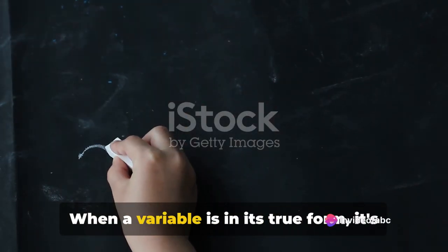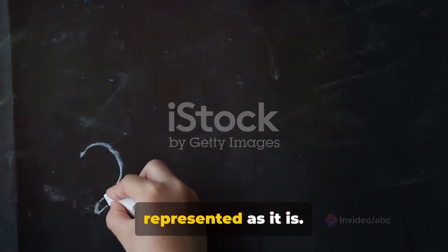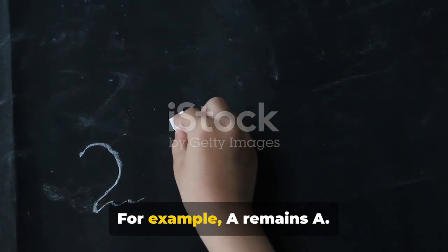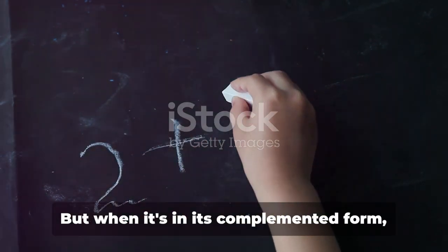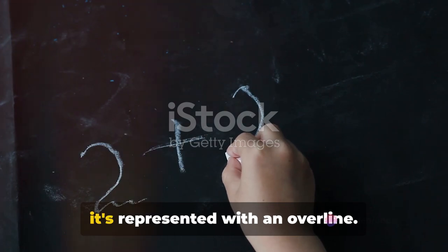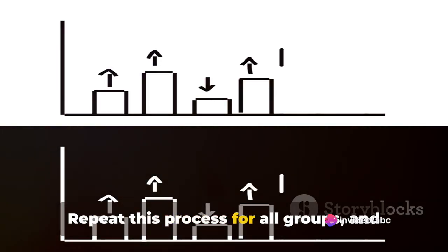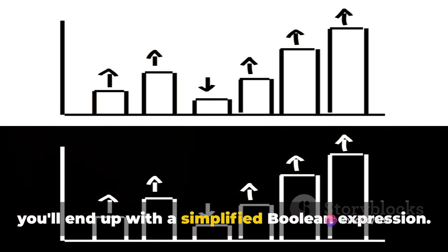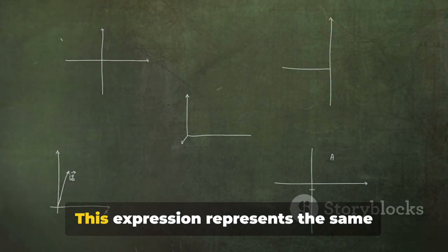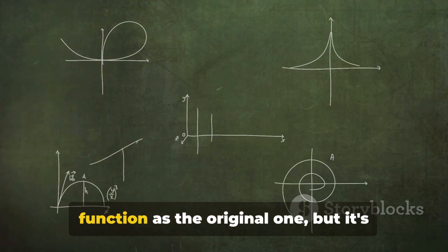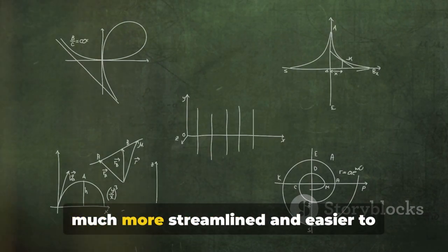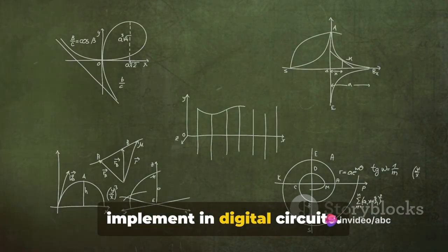Now, here's a neat trick. When a variable is in its true form, it's represented as it is. For example, A remains A. But when it's in its complemented form, it's represented with an overline. So, A becomes A-bar. Repeat this process for all groups, and you'll end up with a simplified Boolean expression. This expression represents the same function as the original one, but it's much more streamlined and easier to implement in digital circuits.